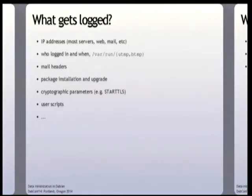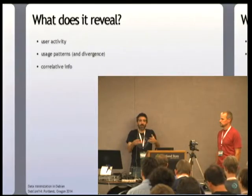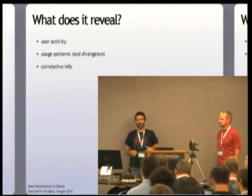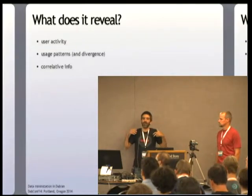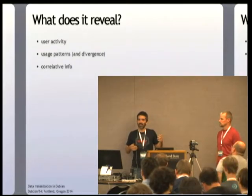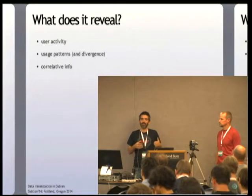The data that gets logged covers lots of stuff, but in particular there are some details that are more identifiable and produce patterns of information that can be used about someone. IP addresses, logs of who logged into a machine, mail headers, cryptographic parameters — there's a whole bunch of different stuff that creates fingerprintable trails in these data sets. Those fingerprintable trails show user activity — what people who are using these services do — and the user may have no idea. In addition to showing what someone did, there are also usage patterns which reveal something about the way you live your life.